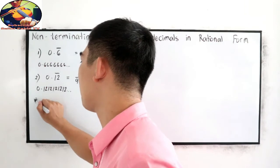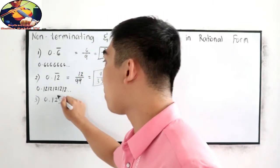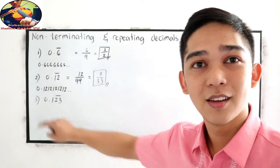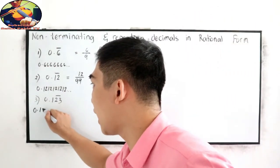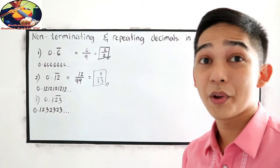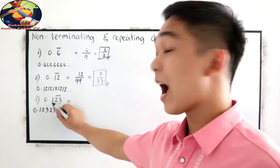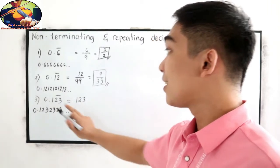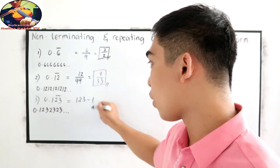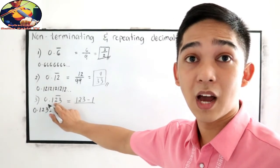Next, number 3. Let's say 0.123 where the bar is located on 2 and 3 only — 1 is not included. So that is 0.123232323 and so on. Our shortcut: copy 1, 2, 3 then subtract the number that is not included in the bar — in this case, 1. So, copy and subtract 1.